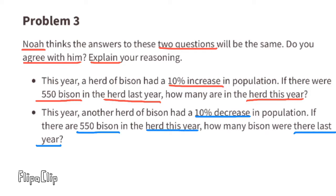Problem number three: Noah thinks the answers to these two questions will be the same. Do you agree with him? Explain your reasoning. Let's look at the first question. This year a herd of bison had a 10 percent increase in population. If there were 550 bison in the herd last year, how many are in the herd this year? 10% of 550 is 55, so we'd have to add 55 to 550. There'd be 605 bison this year.